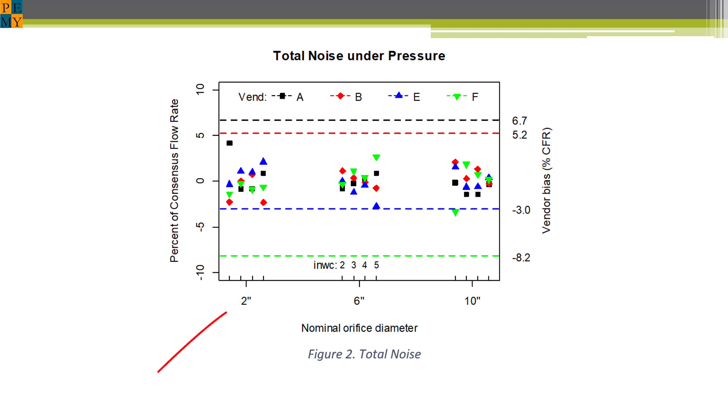The horizontal axis shows nominal orifice diameter as major ticks below the axis and nominal pressure differences as minor ticks above the axis. Solid symbols are noise. The dotted lines are vendor bias.